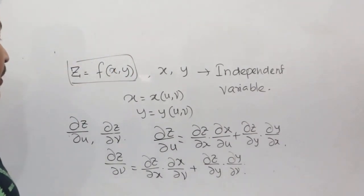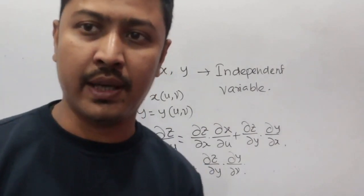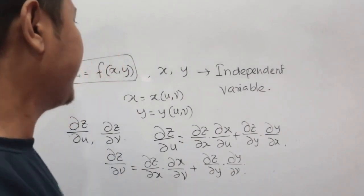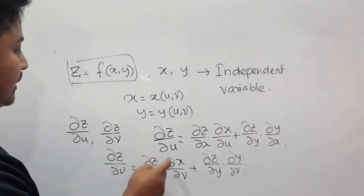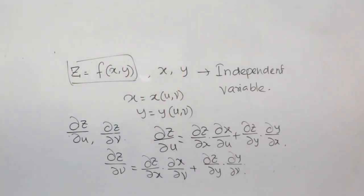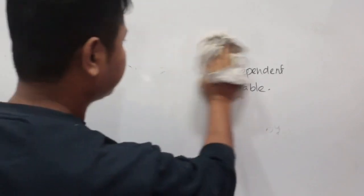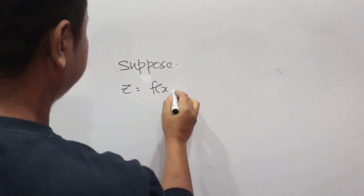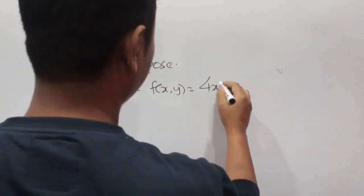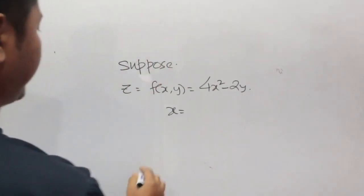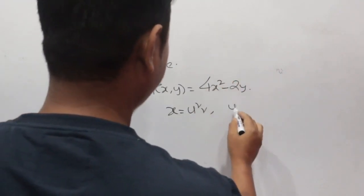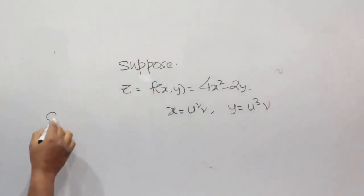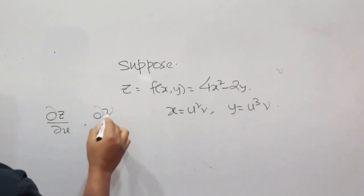With respect to differentiating this function with respect to u and with respect to v, with the help of these two formulas you can find the derivative of this composite function. Let's take an example. Suppose z = f(x, y) = 4x² − 2y, where x = u²v and y = u³v. You need to find ∂z/∂u and ∂z/∂v.